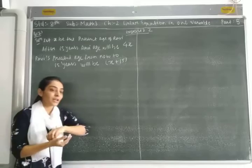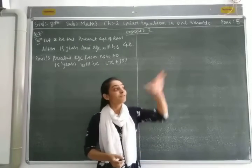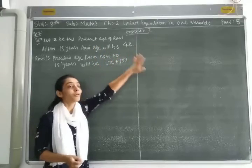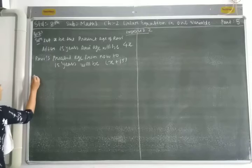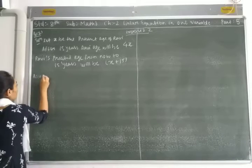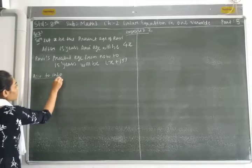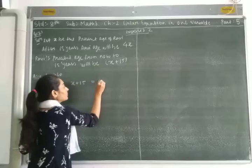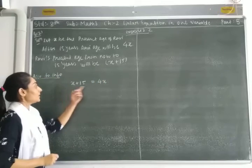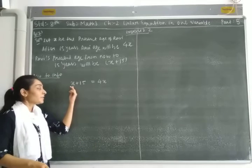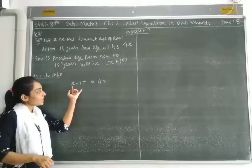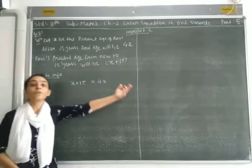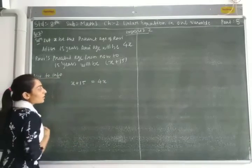Why x plus 15? Whatever the current age is, we add 15 years. So according to the information, x plus 15 equals 4x. Why? Because the present age plus 15 years equals 4 times the present age.